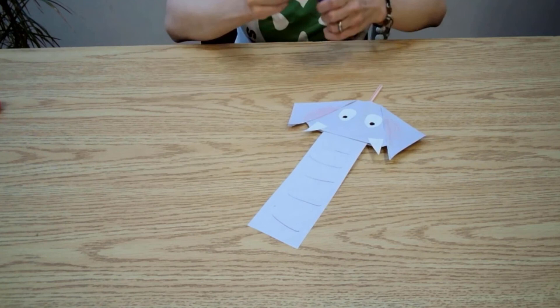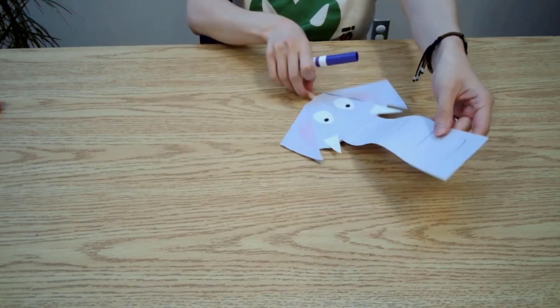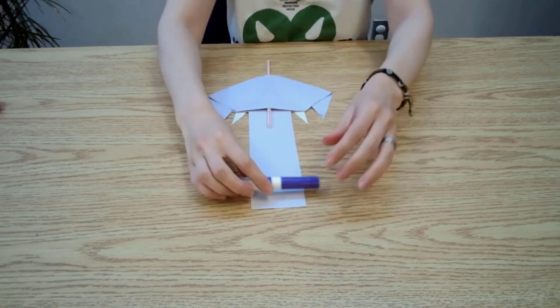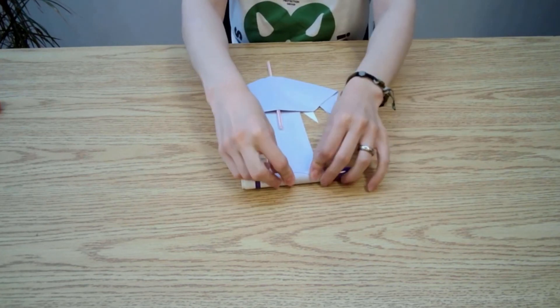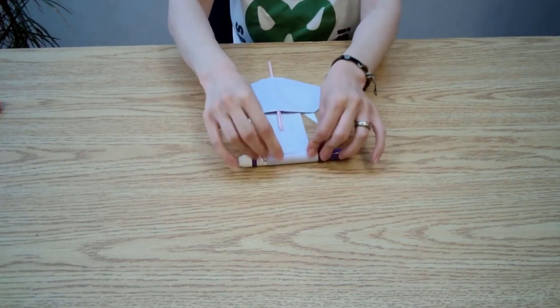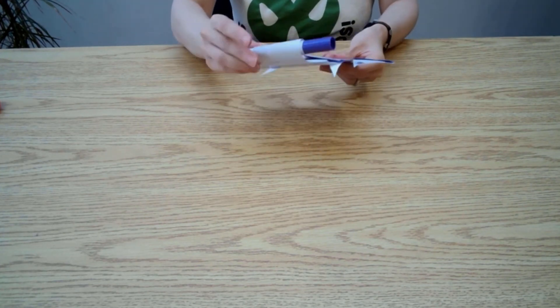When you're satisfied with your coloring, use a pencil or a marker to roll your trunk to give it a little bit of a curl. It doesn't need to be too much. You can even use your finger. When you're done rolling your trunk, you're finished.